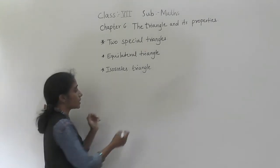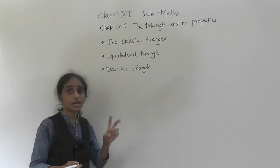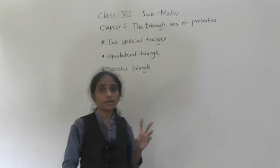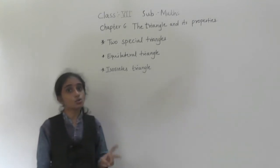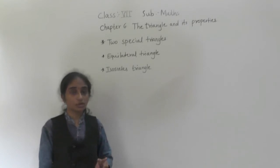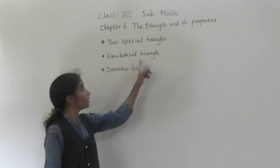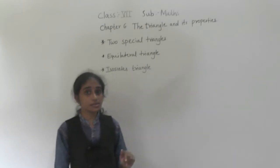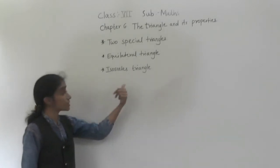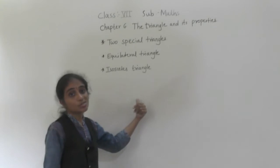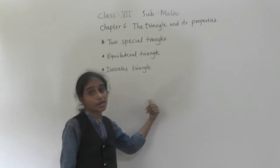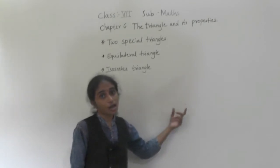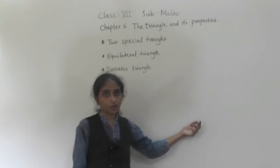Now let's look at the isosceles triangle. What is an isosceles triangle? In an isosceles triangle, two sides are equal. In an equilateral triangle, all sides and all angles are equal and each angle is 60 degrees, but in an isosceles triangle, two sides of the triangle are equal. So that triangle is called an isosceles triangle.